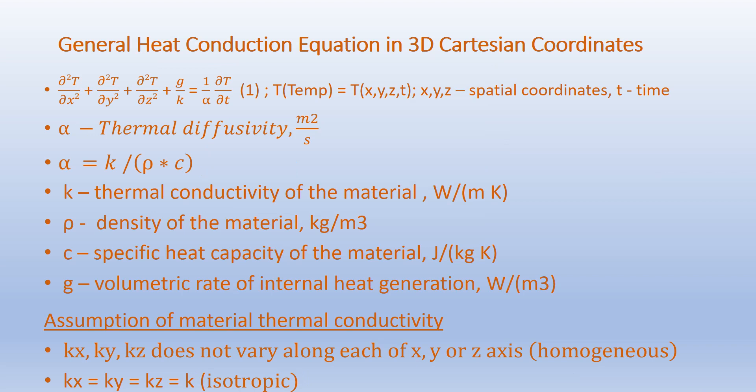The general heat conduction equation in 3D Cartesian coordinates is given as: d²T/dx² + d²T/dy² + d²T/dz² + g/k equals (1/α)(dT/dt), where uppercase T represents temperature and is a function of the spatial coordinates x, y, z and time t. Alpha is the material property called thermal diffusivity given in meter squared per second: alpha equals k over rho·c, where k is thermal conductivity in W/(m·K), rho is density in kg/m³, c is specific heat capacity in J/(kg·K), and g is the volumetric rate of internal heat generation in W/m³.